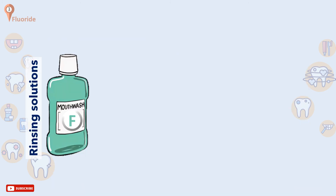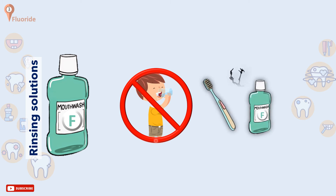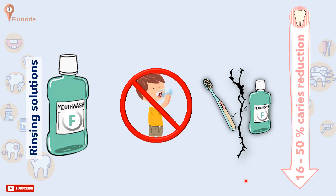Another form of fluoride application is rinsing solution. It is contraindicated in children younger than 7 years to avoid the risk of accidental swallowing. The most widely used solution is sodium fluoride. It should be used at a separate time to brushing, and the concentration depends on the frequency of use — about 0.2% for weekly use or 0.5% for daily use. Daily use is the most beneficial, with caries reduction of 16 to 50% reported with rinsing alone.